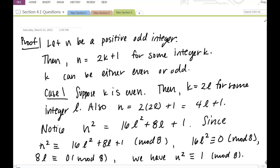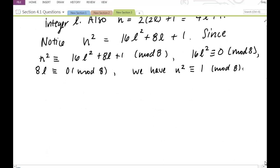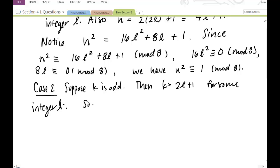Case 2. k is odd. Suppose k is odd. Then k is equal to 2l plus 1 for some integer l. So, n is equal to 2 times 2l plus 1 plus 1 is equal to 4l plus 3. Also, n squared is equal to 16l squared plus 24l plus 9.